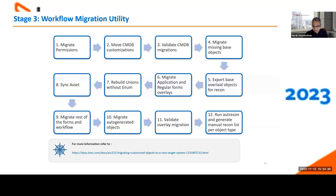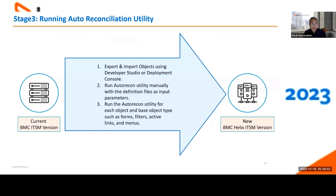Auto reconciliation is a process where a tool automatically reconciles objects that BMC may have changed. For example, if you have an overlay with a field that both you and BMC modified, the auto recon will handle it. You can run auto recon two ways — through the utility or manually. For manual auto reconciliation, the prerequisite is to export and import your objects using Developer Studio, Deployment Console, or the packaging list. Links will be shared with two references: best practices for migrating CMDB objects and best practices for migrating your AR objects. These links explain how to use packaging list combinations to speed up your customization migration.